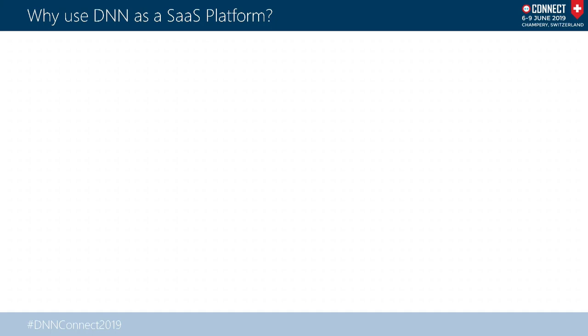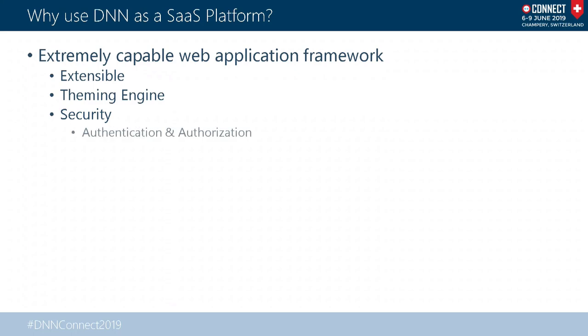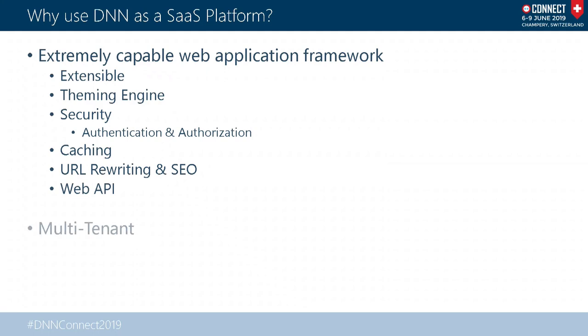In the 15 years I've been using DNN, I have not seen a single project that my team or I have not been able to leverage DNN for. It's an extremely capable web application framework. It's extensible — if you don't have something, build it. It's an awesome theming engine. There's not been a single design someone threw at us that we couldn't do in DNN. It has security built in — authorization, authentication, caching, URL rewriting, SEO — everything a great web application framework needs, including API.